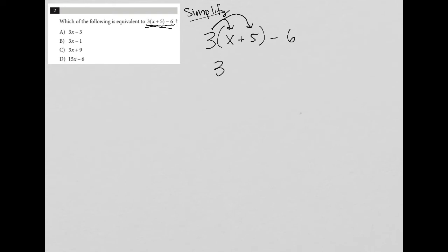So I have 3 times x, which is 3x. 3 times 5, which would be plus 15. And then I just bring this minus 6 down, so I have minus 6.